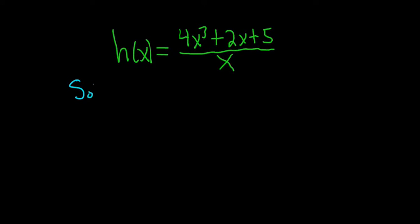Find the derivative solution. We do have a fraction, so we could use the quotient rule. However, we have a monomial on the bottom. Whenever you have a monomial on the bottom, it's a better idea to rewrite the function.